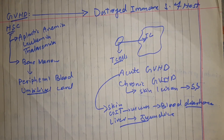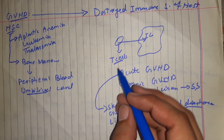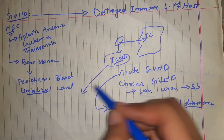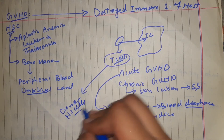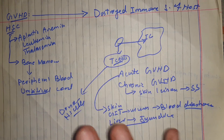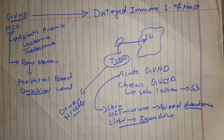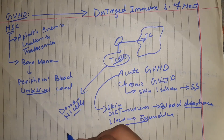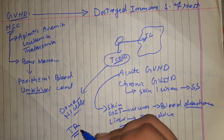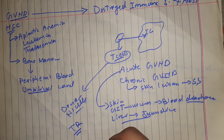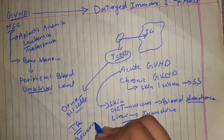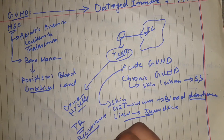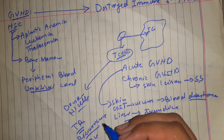To overcome graft versus host disease, one approach is to destroy the T cells in the donor's hematopoietic stem cells. When T cells in the donor's graft are eliminated, the risk of graft versus host disease decreases. However, there is an increased risk of transplant rejection and recurrence of leukemia.